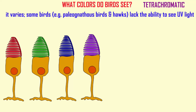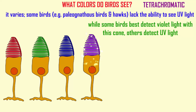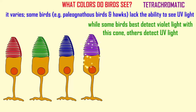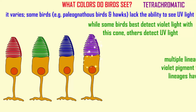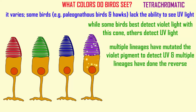However, the cone which detects violet light in many groups of birds can be modified to now perceive ultraviolet light. This final cone can perceive either violet or ultraviolet light — it just takes one single mutation, changing one amino acid into another, and this can happen in two different places.